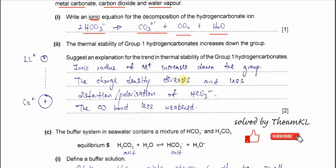Part two: the thermal stability of Group 1 hydrogen carbonates increases down the group, meaning they become harder to decompose. The reason is that the hydrogen carbonate anion is the same throughout, so the change is the size of the Group 1 cation. Using lithium ion and caesium ion as examples — going down the group, the charge is the same but the size is different.